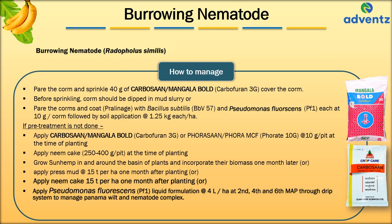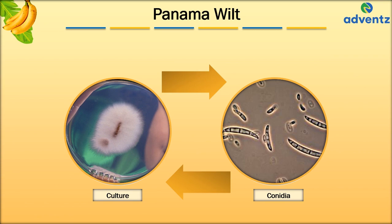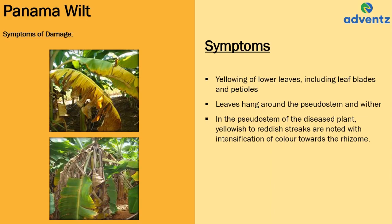The next disease is Panama Wilt, also known as Fusarium oxysporum forma specialis cubense. This is a soil-borne fungal disease that gets entry into the plant body through roots. It is most serious in poorly drained soils. Initial symptoms of Panama Wilt are yellowing of lower leaves including leaf blades and petioles. The leaves hang around the pseudostem and wither. In the pseudostem of the diseased plant, yellowish to reddish streaks are noted with intensification of colour towards the centre.